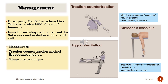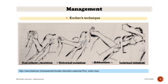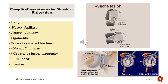There are three other common reduction methods: Hippocrates, Timpson, and Kocher method. The Kocher method involves flexing the elbow, making longitudinal traction, externally rotating the humerus, then adducting the shoulder and internally rotating.